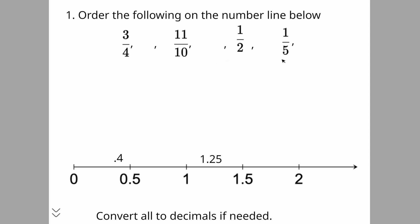Now we have to convert these into decimals. When I think of three-fourths, I always tell students to think about quarters. Four quarters make a dollar, so we can set up an equivalent fraction: if we have four quarters that equals 100 cents, and if you have three of them, that would be 75 out of 100 — and 75 out of 100 can be converted into 0.75.